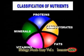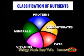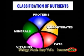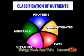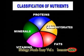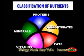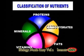Classification of nutrients: nutrients are classified into five major groups — proteins, carbohydrates, fats, vitamins, and minerals.